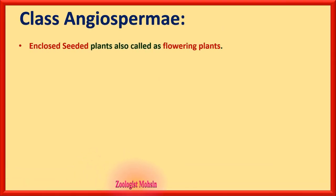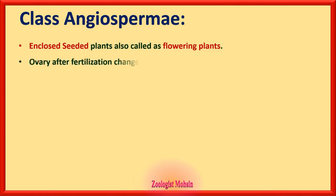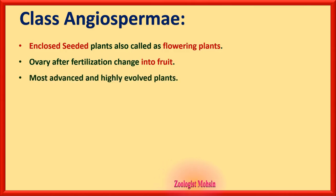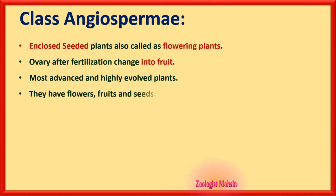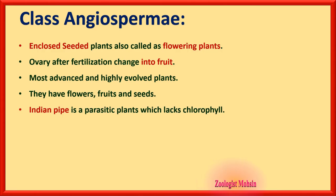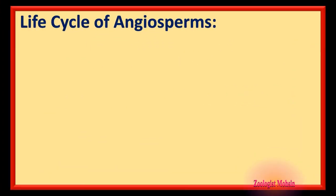Angiospermia means enclosed seed; they are also called flowering plants because they produce flowers. The ovary after fertilization changes into fruit. The most advanced and highly evolved plants are angiosperms — they have flowers, fruits, and seeds. Indian pipe is a parasitic plant which lacks chlorophyll; that MCQ has already been asked in past papers.